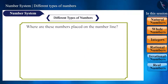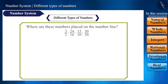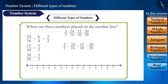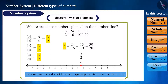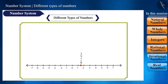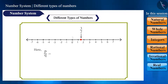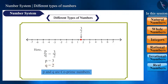Friends, can you tell me where all these different numbers — 3 by 2, 24 by 16, 15 by 10, 30 by 20 — will be placed on the number line? Even though these numbers are different, their value remains 3 by 2, which will be located here on the number line. That is, rational numbers do not have a unique representation in the form p by q. So when we represent p by q on the number line, we assume that q is not equal to 0 and p and q have no common factor other than 1 — that is, p and q are co-prime numbers.